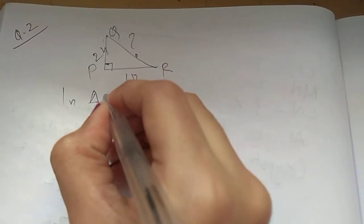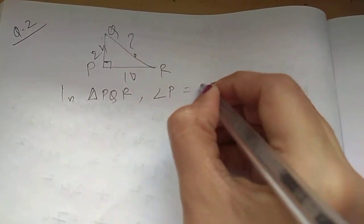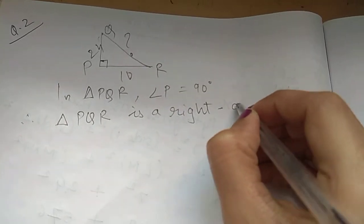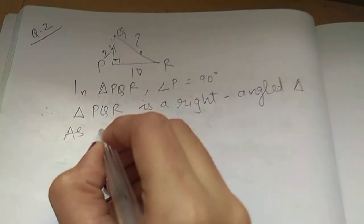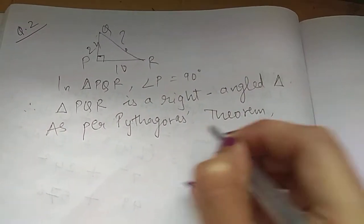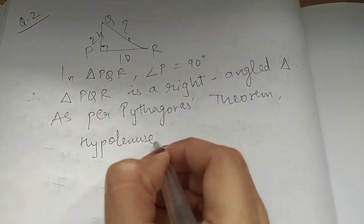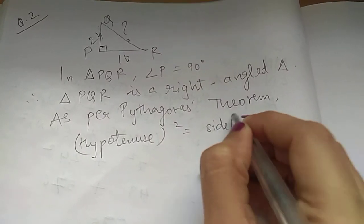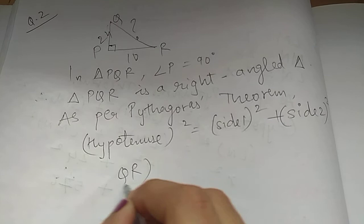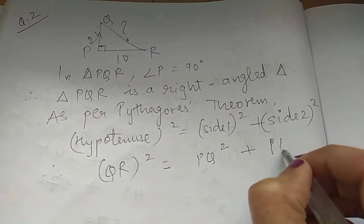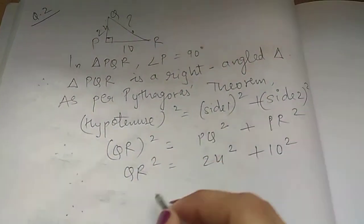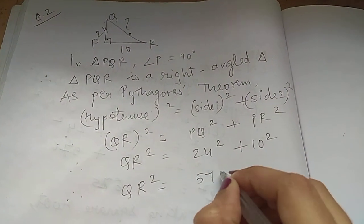This is how we will start. In triangle PQR, angle P equals 90 degrees. Therefore, triangle PQR is a right angle triangle — it is already mentioned in the question itself. As per Pythagoras theorem, hypotenuse square equals side 1 square plus side 2 square. The hypotenuse is QR. Taking PQ and PR as the two sides, QR is unknown. So QR square equals 24 square plus 10 square, which is 576 plus 100.